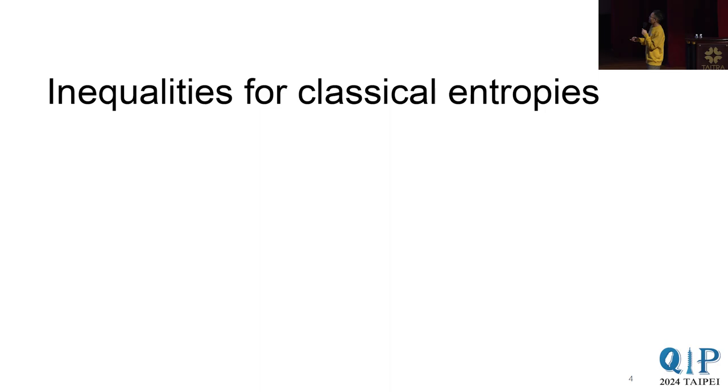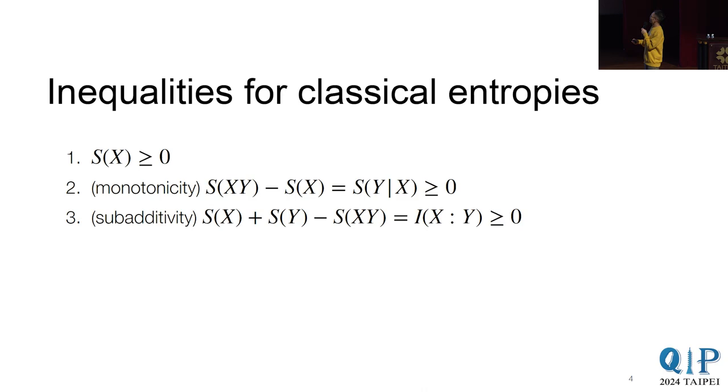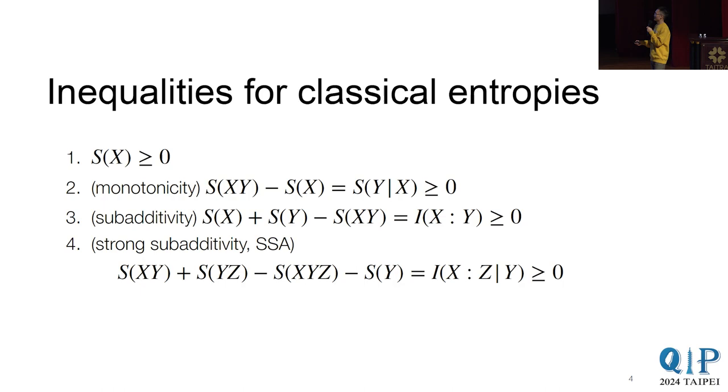And for us, we'll be mainly interested in their inequalities. So we'll start from some basic ones. First, we know entropy is always positive. Also, we start from classical entropies. The more systems, the larger the entropy. And then we have subadditivity, which is saying that mutual information is positive. And then we have strong subadditivity, which says that the conditional mutual information is positive. So all of these are pretty straightforward to show.